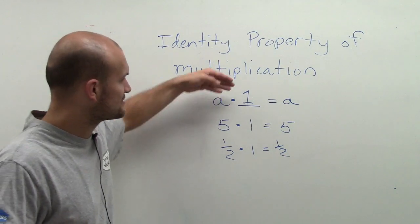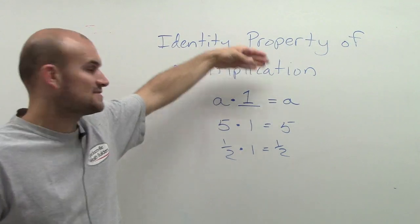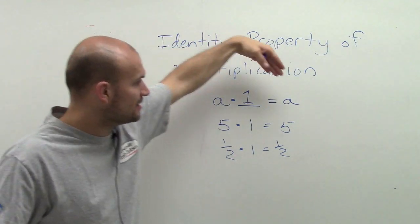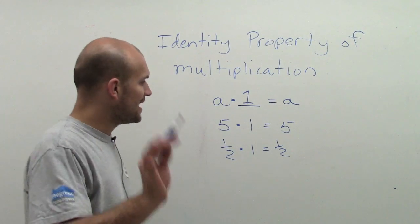What happens is it doesn't matter because when you're multiplying by one, that means one set of your number. Well obviously one set of your number is going to equal a, so we're all good.